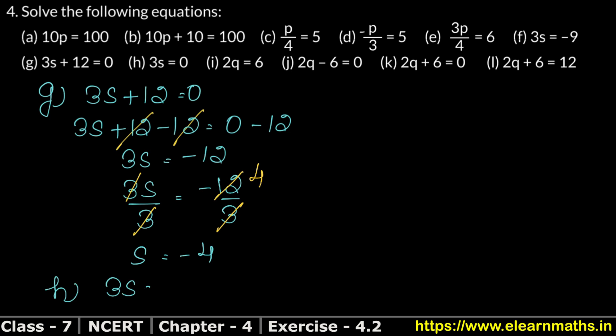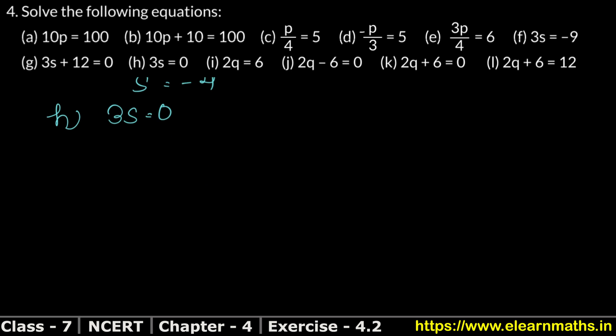Part H is: 3s equals 0. Since s is multiplied by 3, we divide both sides by 3. This gives us 0 divided by 3. If we divide 0 by any value, the answer is 0. So s equals 0 is the answer.